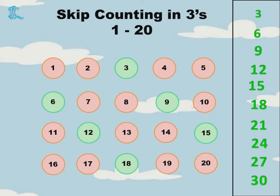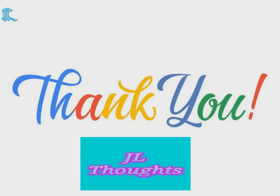Shall we repeat it once again? 3, 6, 9, 12, 15, 18, 21, 24, 27, 30. Okay children, you all understood Skip Counting by Threes. Skip Counting by Threes means leaving two numbers in between and jumping on to the third number — or you can use your fingers and count the next three numbers. Thank you.